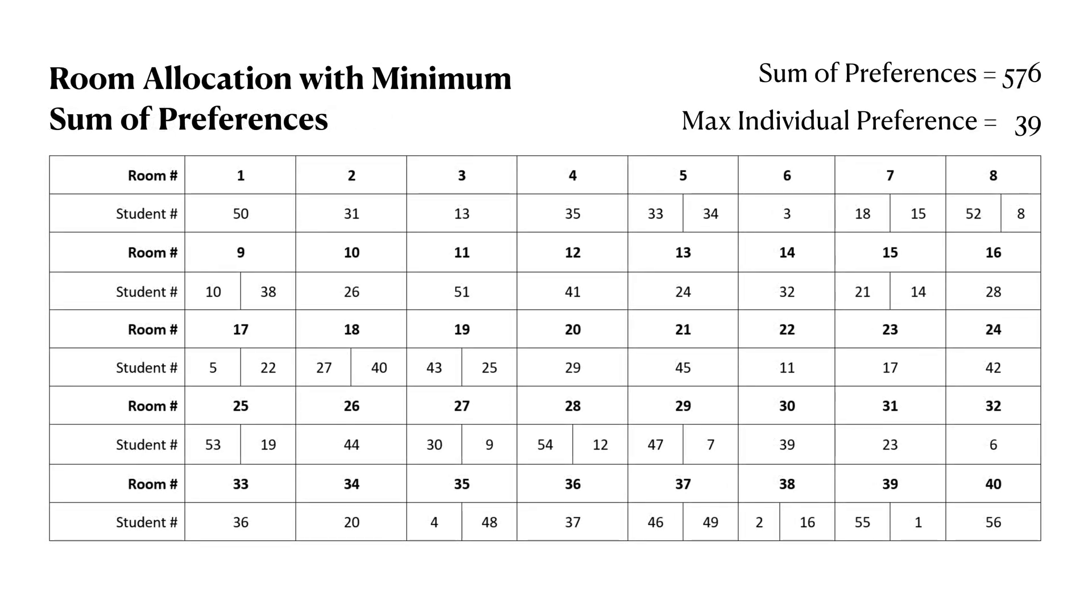This is the PSO run that came out with the minimum sum of preferences. The allocation table is as follows. However the max individual preference is quite high. Thanks for watching and have a nice day.